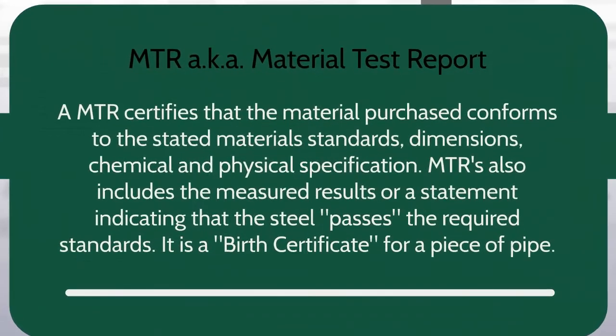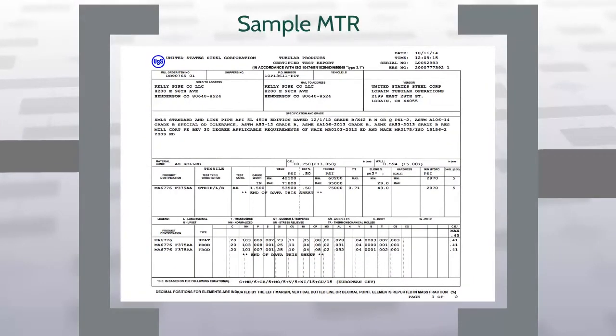All orders of steel pipe will come with an MTR — a material test report. An MTR certifies that the material purchased conforms to the stated material standards, dimensions, chemical, and physical specifications. MTRs also include the measured result or a statement indicating that the steel passes the required standards. It's a birth certificate for a piece of pipe. Here is an example of a mill test report.